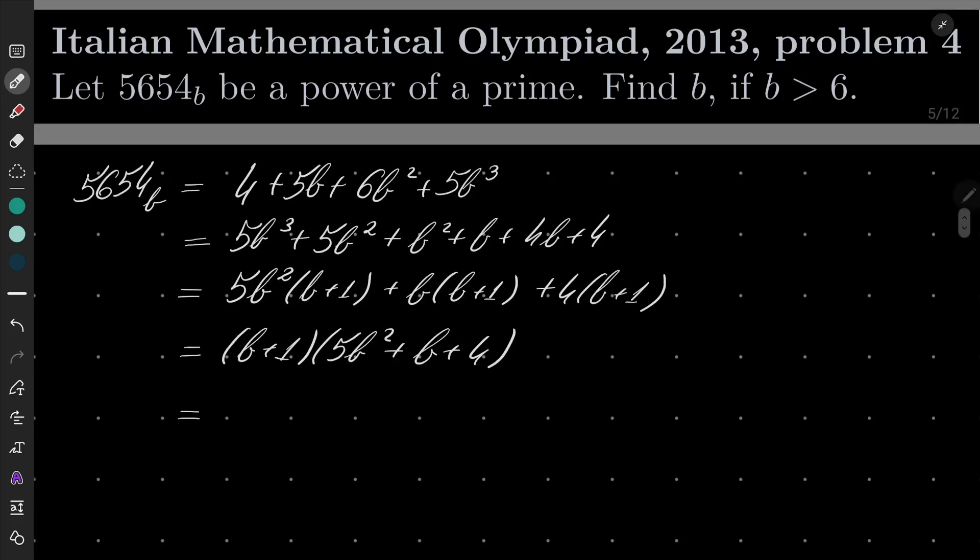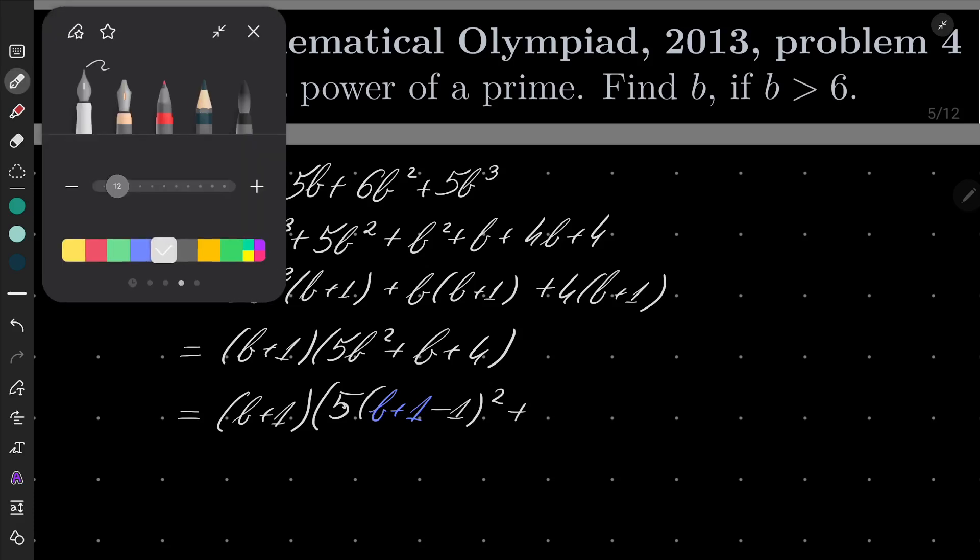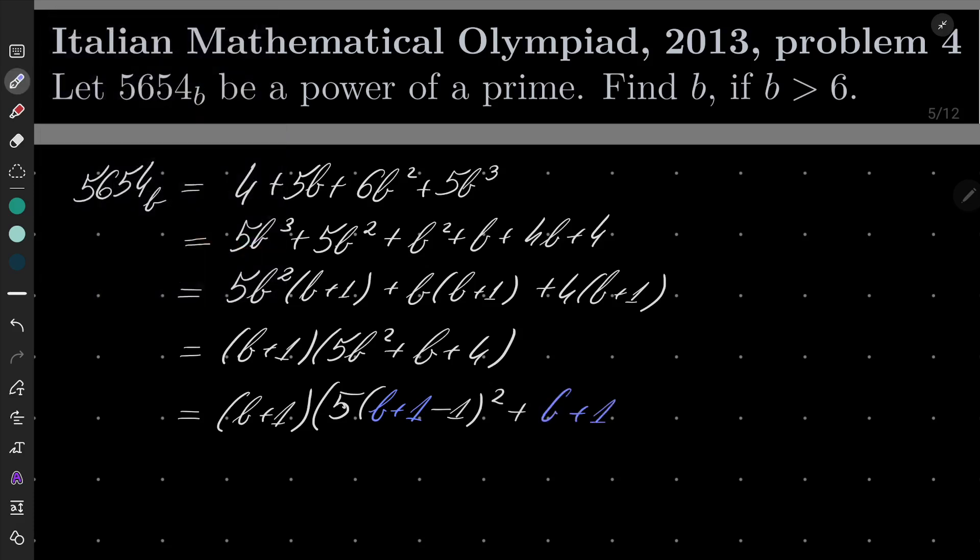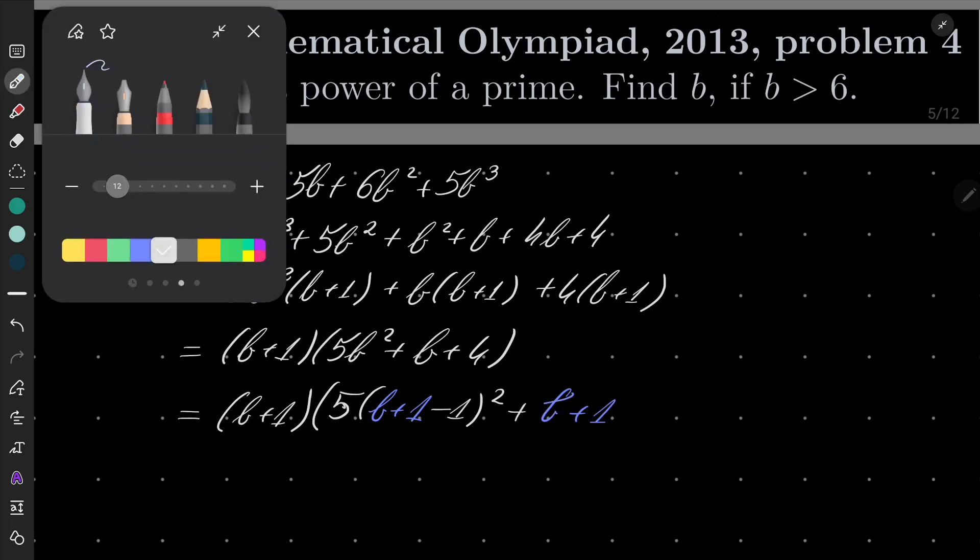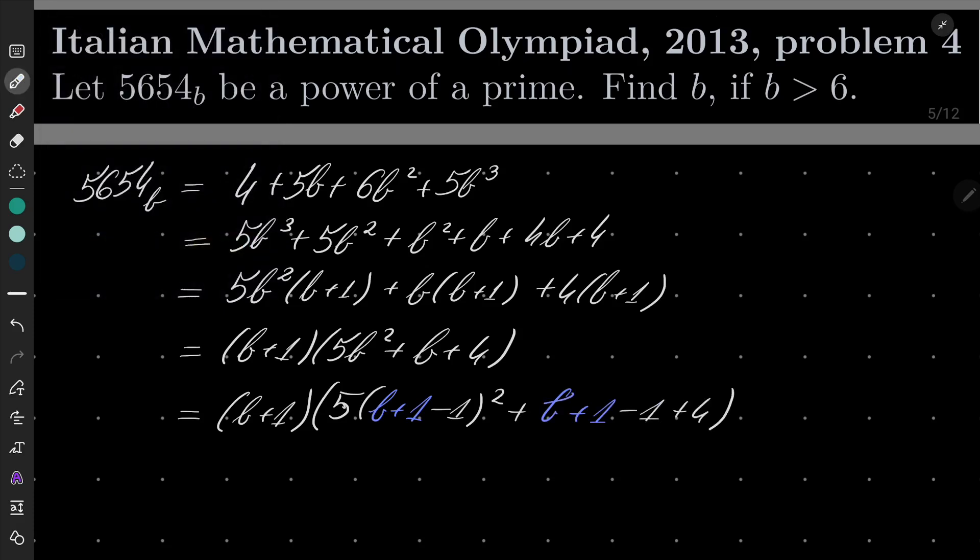This second parenthesis is a quadratic polynomial which has no real zeros. Since in our first parenthesis we have B plus 1, let's express the second parenthesis also in terms of B plus 1. We can write B as B plus 1 minus 1.